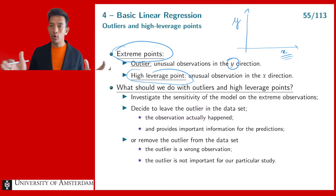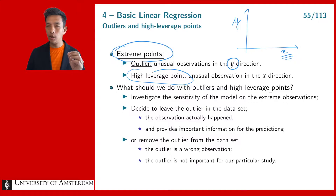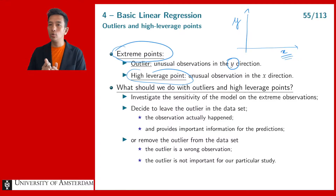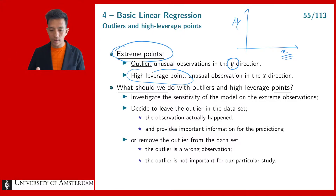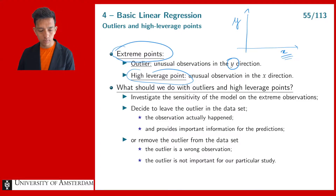The x is often the variable we use to explain or predict y. If we have more dimensions, we often have one y — one thing we want to predict, for example the weather or the stock market — and then one or multiple x variables to predict the response. If you have unusual observations in the x direction, we talk about a high leverage point.